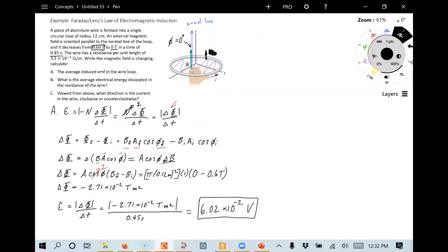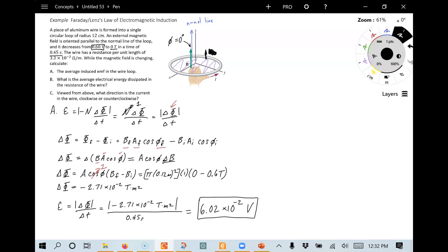All right. Let's look at part B. What is the average electrical energy dissipated in the resistance of the wire? Well, the idea here is that the induced EMF, it's like a battery. It has the same effect as if you put a battery into that loop of wire. And because of that, we're going to get a current to flow. And given the current, we're going to be able to have resistance in the wire generate electrical power. In other words, electrical energy that's dissipated in the resistance of the wire. So we're looking for the electrical power.